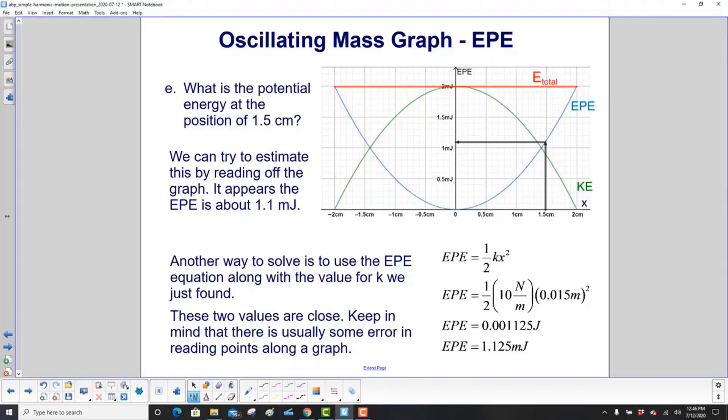What is the potential energy at the position of 1.5 centimeters? We can estimate it by reading off the graph. We go up until we hit the EPE curve, and then over to the energy. It looks like it's about 1.1 millijoules. But if we want it exact, we use the EPE equation. We found the value of k on the last slide. Input that in, and here's your x. Make sure you use it in meters. Do the calculation, and you get EPE is 1.125 millijoules. The values are close, but keep in mind, there's usually some error in reading points along a graph.